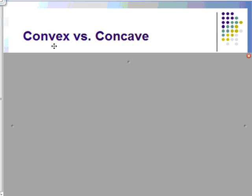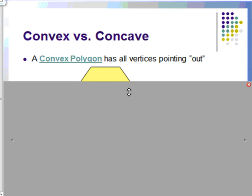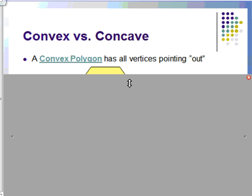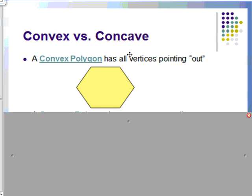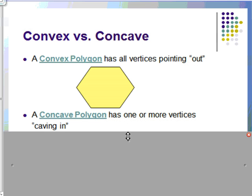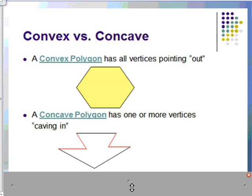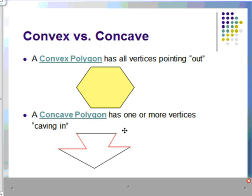We have one last way of classifying polygons. You can either classify them as convex or concave. A convex polygon has all its vertices pointing out, like this. Everything is coming out, convex. Concave, on the other hand, has one or more of its vertices caving in. That's where you get the cave from. It's caving in on itself, for example, like this, where you see these angles are going inside the polygon, so to speak. They're caving in on each other.